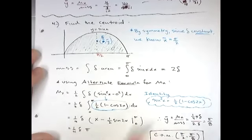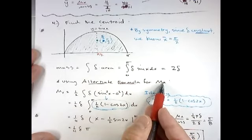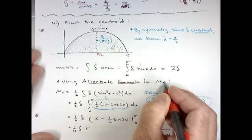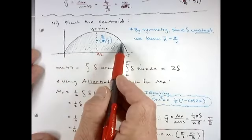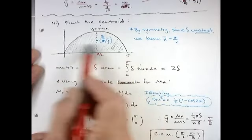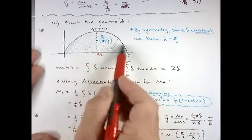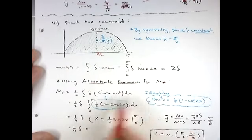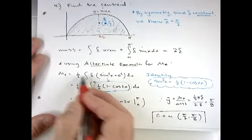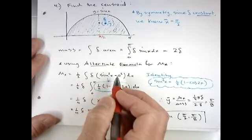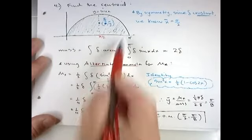On the previous video we talked about an alternate formula for M_x, the moment about the x-axis. We don't want to use horizontal cross sections because the width of our horizontal cross section is bounded by the same function. So the alternate formula allows us to stick with vertical cross sections. Recall the formula was one half times delta times (f(x)² - g(x)²) where f(x) was the top function and g was the bottom function, which is zero.